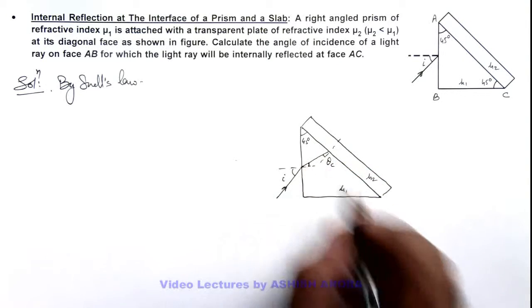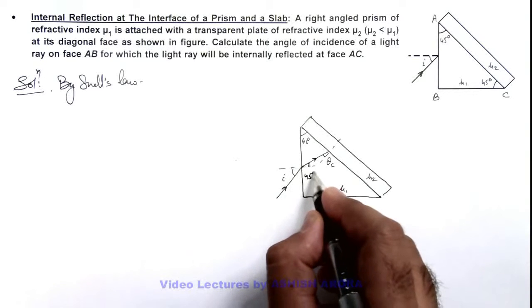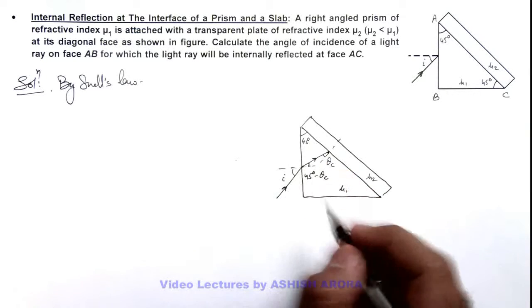So the angle at which the light ray is refracting in the glass slab must be 45 degrees minus θc, as the sum of these two refracting angles must be equal to the prism angle.